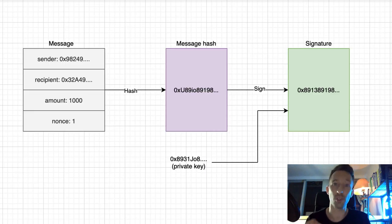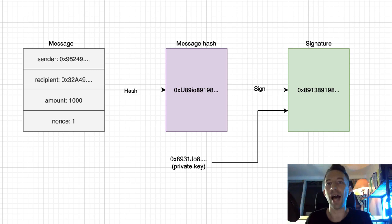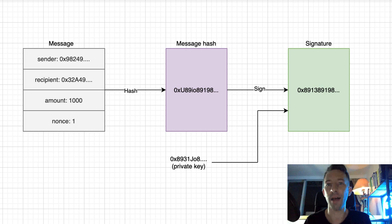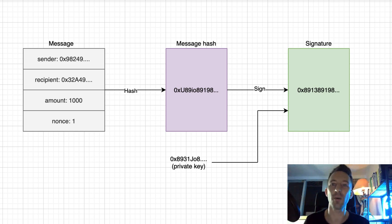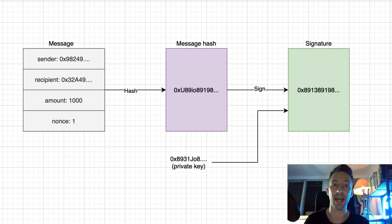The first step is to create a message. You can put whatever you want in it, but it's better to use a structured format. In our case, we will have the address of the sender, the address of the recipient, the amount, then a nonce to prevent transfers from being processed twice. The next step is to hash this message. We could sign the message directly, but for big messages the signing algorithm might take more time. With a hash that always has the same length, we can guarantee that the time for signing will remain constant, no matter the size of the message.